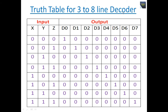Here I provide the truth table for a 3-to-8 line decoder, where there are 3 inputs and 8 outputs. When all inputs are 0, only D0 is 1 and the rest of the outputs are 0. When Z is 1 and X and Y are 0, then only D1 is 1 and the rest of the outputs are 0, and so on.